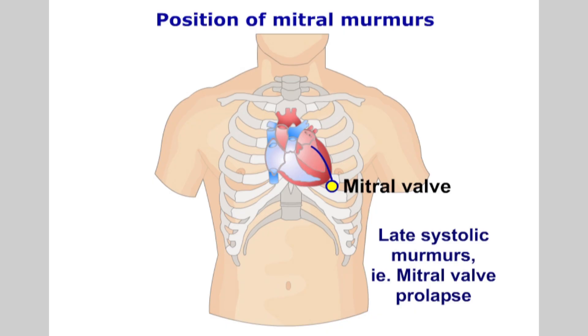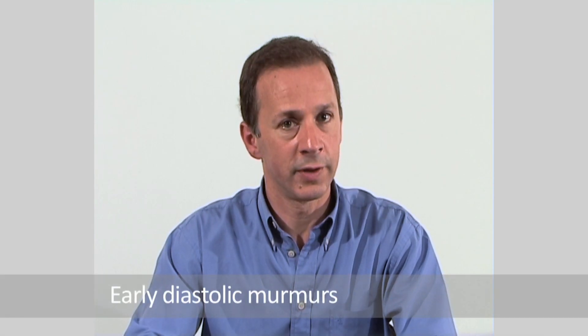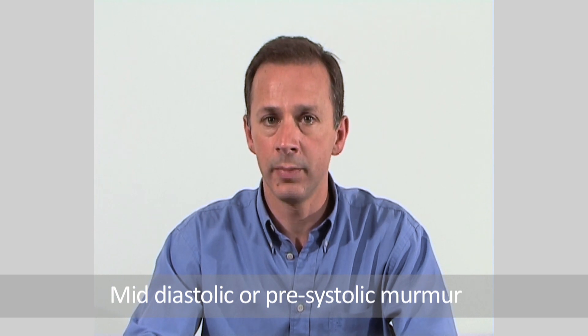A late systolic murmur is produced by a mitral valve prolapse and may be accompanied by a systolic click sound. A murmur may also be heard during diastole; in this instance they are described as early diastolic, mid-diastolic, or late diastolic. Early diastolic sounds are produced by blood regurgitating through the semilunar valve. A mid-diastolic or presystolic murmur is produced by turbulent blood flow through the atrioventricular valves.